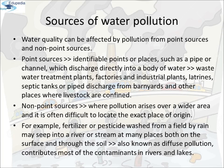Sources of Water Pollution: Water quality can be affected by pollution from point sources and non-point sources. Point sources are identified points or places such as a pipe or channel which discharge directly into a body of water. These might be from wastewater treatment plants, factories and industrial plants, latrines, septic tanks, or pipe discharges from barnyards or other places where livestock are confined.